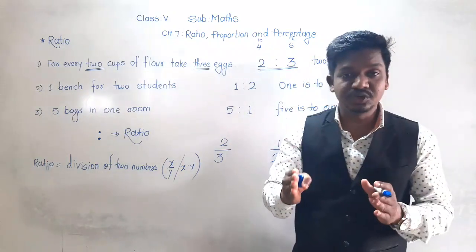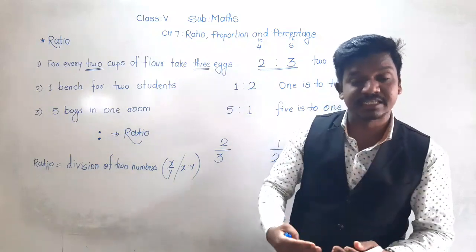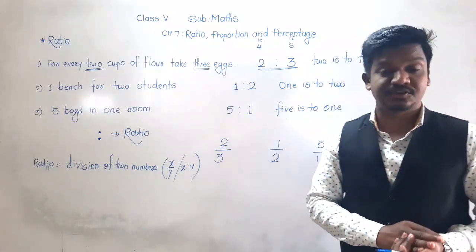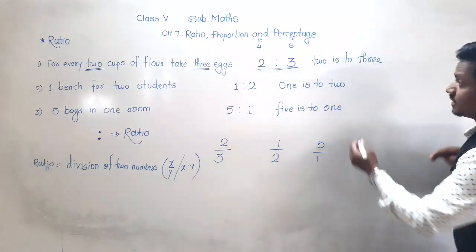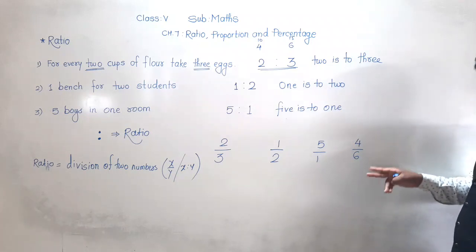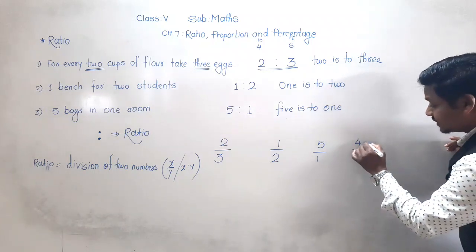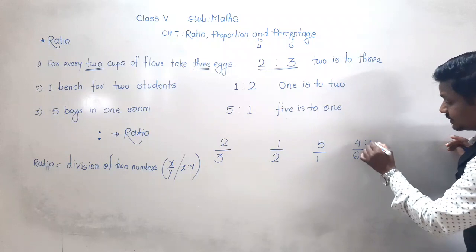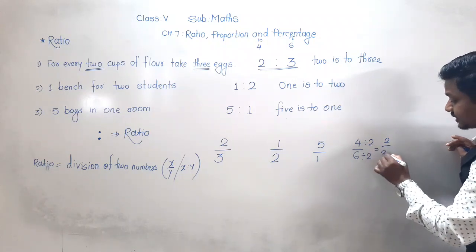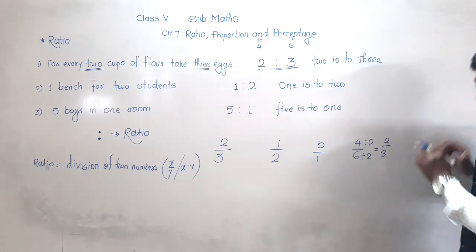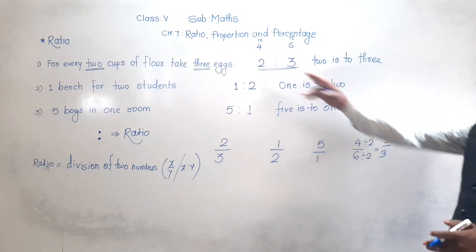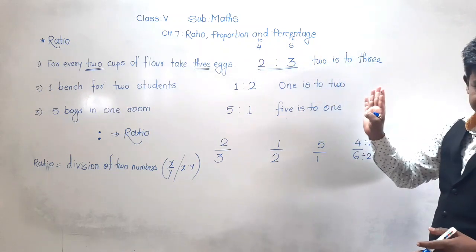So ratio is basically in its simplest form. If you want to write 4 is to 6, that is 4 upon 6 - this is not basic. This can be converted into simplest form since both are divisible by 2. So 2 twos are 4 and 2 threes are 6. Their simplest form is 2 upon 3, that is 2 is to 3.